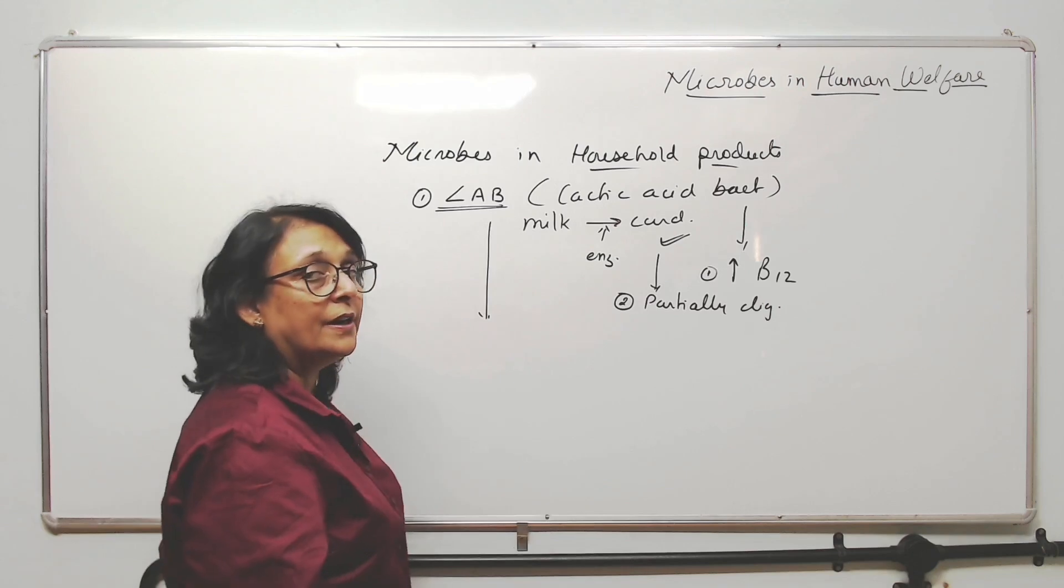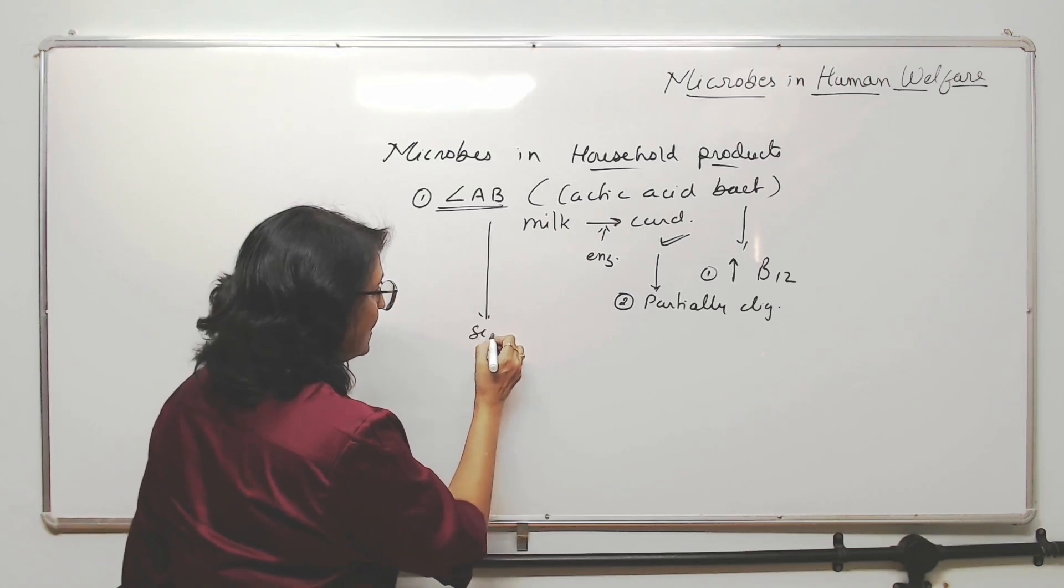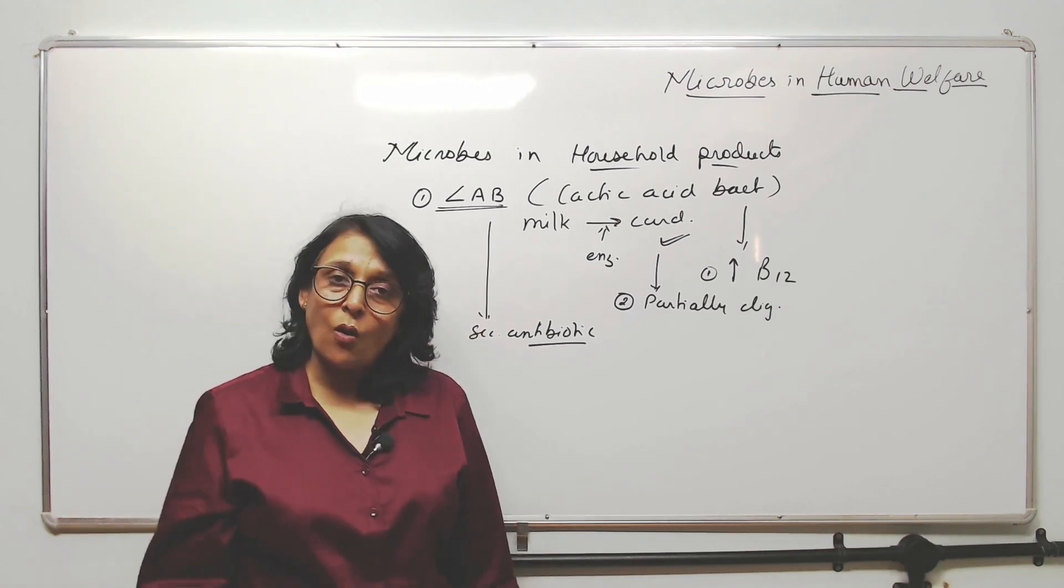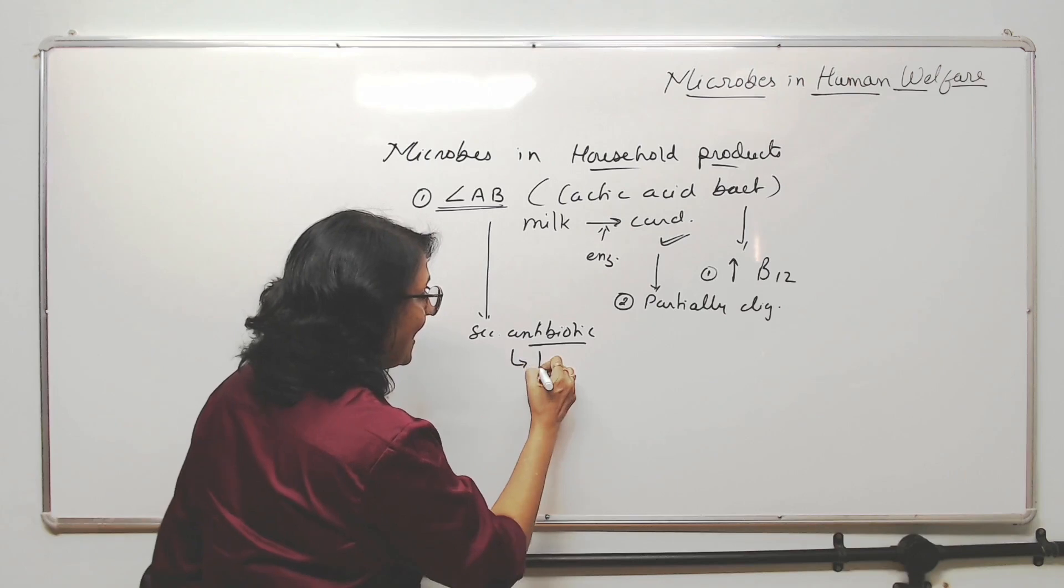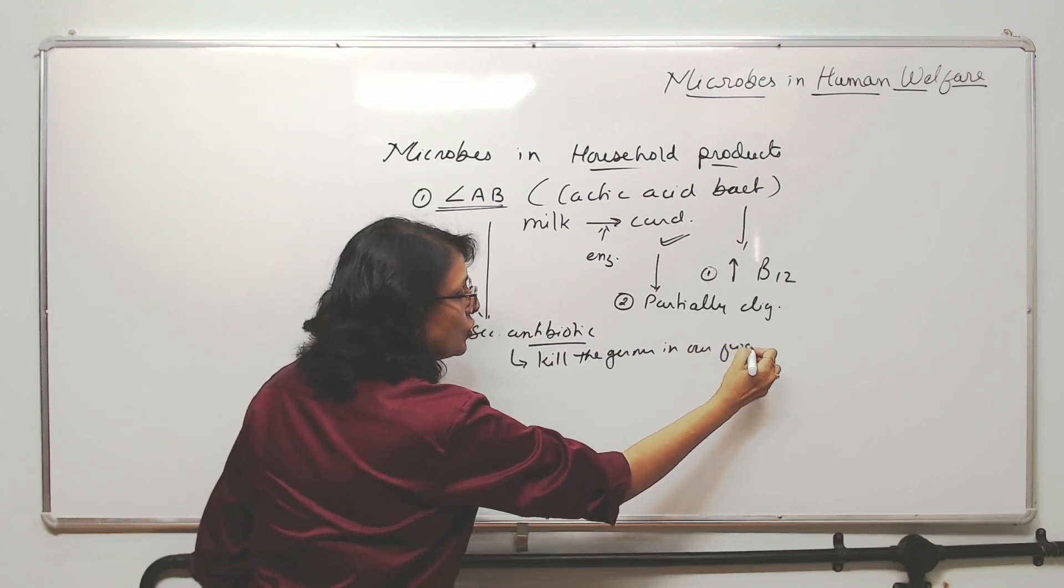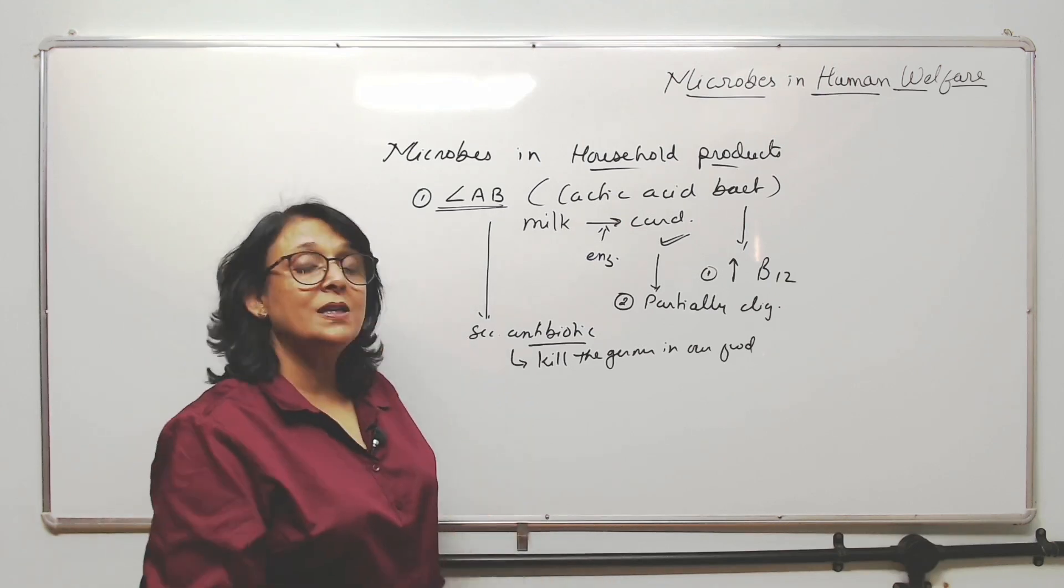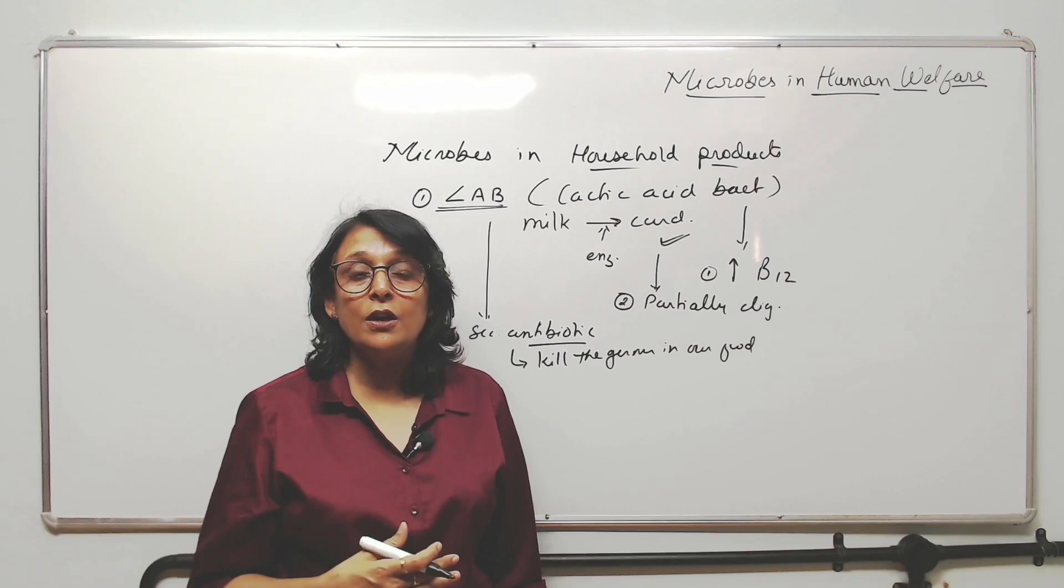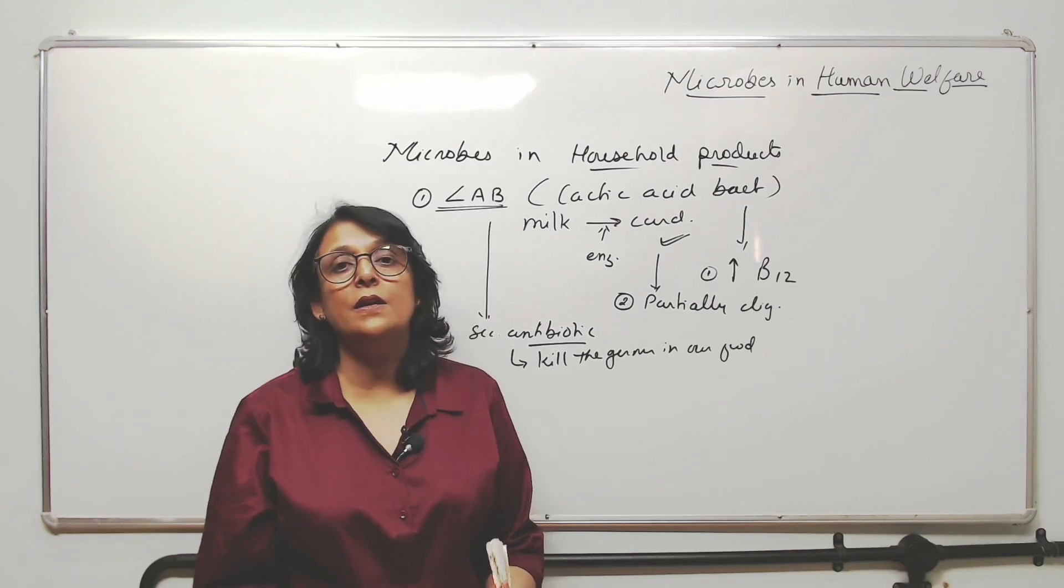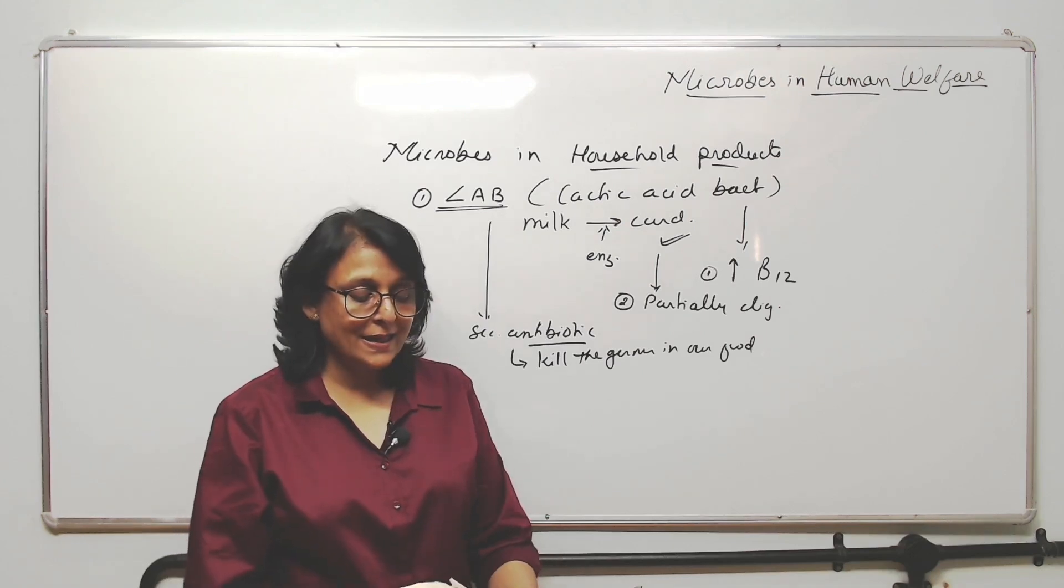These bacteria, when we take curd, also come into our alimentary canal. These bacteria secrete antibiotic. Antibiotic production is the property of these bacteria. These antibiotics kill the germs in our food. The food which we eat will also bring some bacteria or pathogens, so these antibiotics kill them. When we eat curd we are getting so many benefits. That is why in a typical Indian food you will always find some item made out of curd.